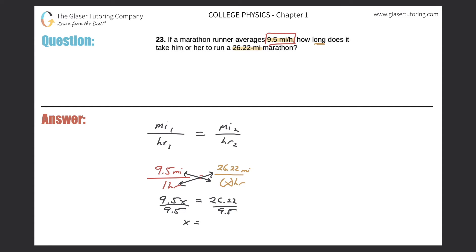We'll get our x value. Let's plug that into the calculator: 26.22 divided by 9.5. So 2.76. 2.76 looks like hours.